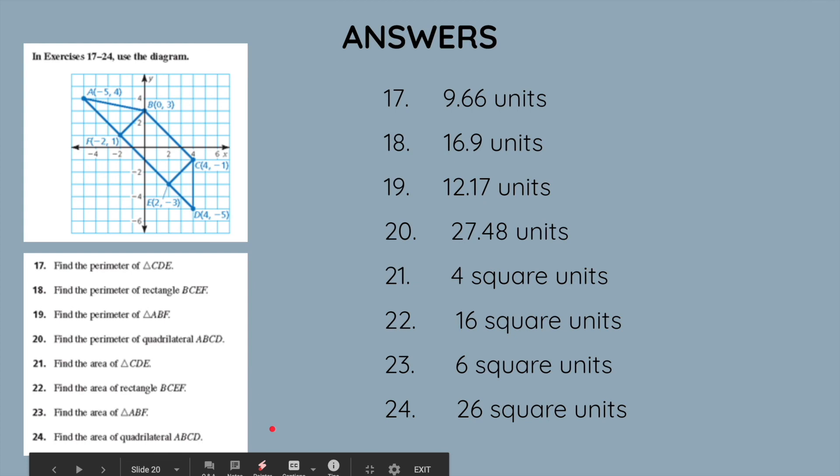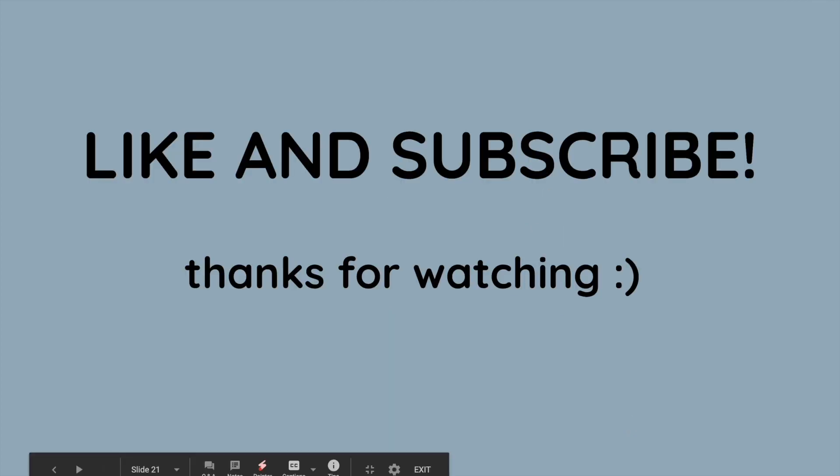Finally, for our last set of problems, 17 through 24, we have 9.66 units, 16.9 units, 12.17 units, 27.48 units. And then, that is all for the perimeter. Now, for the area, we have 4 square units, 16 square units, 6 square units, and 26 square units. And, just so you know, most of these are rounded numbers. Please like and subscribe if this video was helpful and you want more content on the following geometry chapters. Thank you!